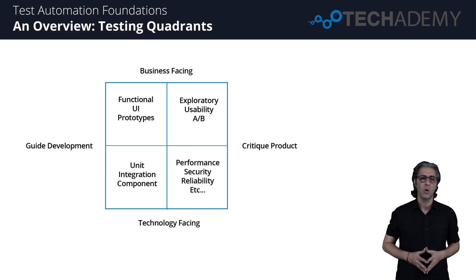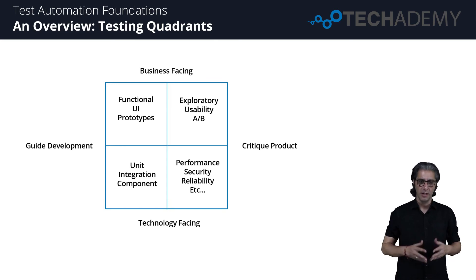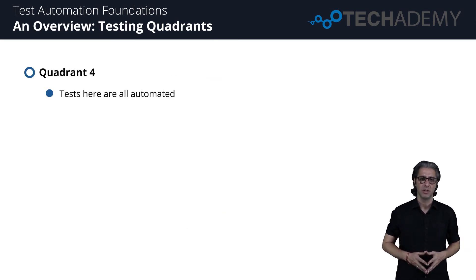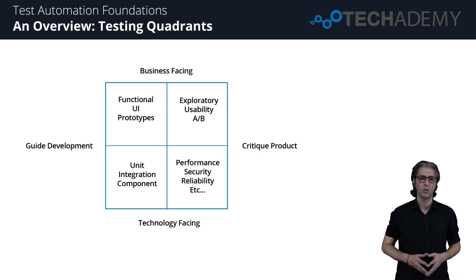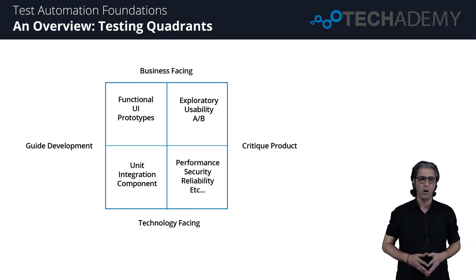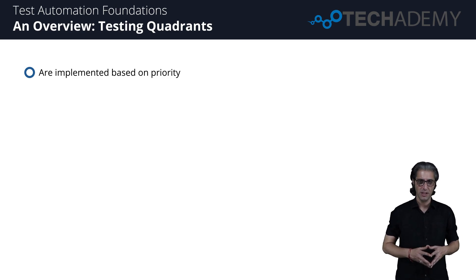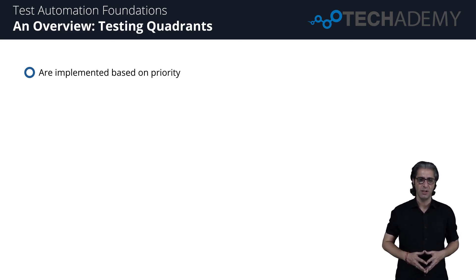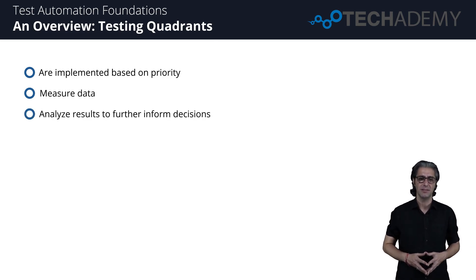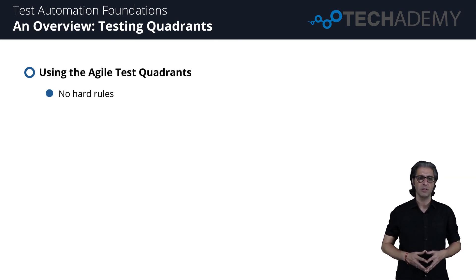Finally, Quadrant Four in the bottom right has technology-facing tests that critique the product. These tests are all automated and built with the help of specific tools. Their purpose is to provide targeted information about the application. Instances include performance, load, security, and reliability tests. Quadrant Four tests are performed based on priorities — for instance, fast page load time is important, making performance testing a good candidate. These tests measure data which can be analyzed, quantified, and visualized.